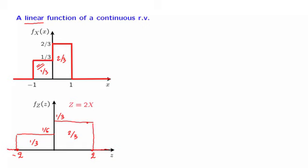So what happened here? We started with a PDF of x and essentially stretched it out by a factor of 2 while keeping the same shape. However, we also scaled it down by a corresponding amount: 2 thirds became 1 third, and 1 third became 1 sixth. The reason for this scaling down is because we need the total probability — the total area under the PDF — to be equal to 1.